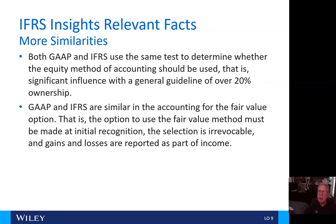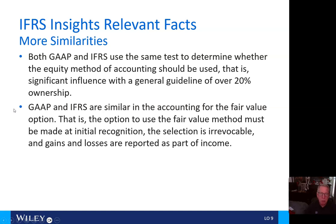More similarities: both IFRS and GAAP use the same test to determine whether the equity method of accounting should be used — that is, significant influence with a general guideline of over 20% ownership. GAAP and IFRS are also similar in accounting for the fair value option: the option to use the fair value method must be made at initial recognition, the selection is irrevocable, and gains and losses are reported as part of income.